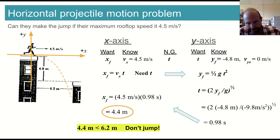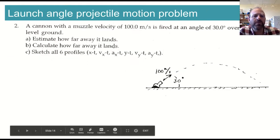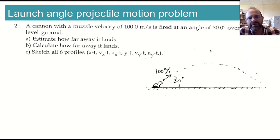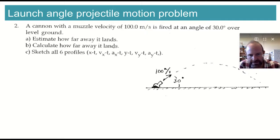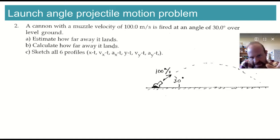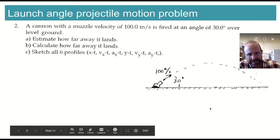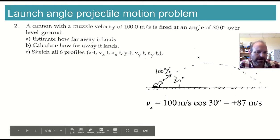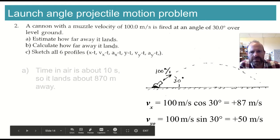Another example: we are firing a 100 meter-per-second projectile at an angle of 30 degrees over level ground, and we want to know how far away it lands. First, a quick estimate: this is a 30-60-90 triangle, which means the y component of initial velocity is about 50 meters per second. That means it will take 5 seconds to go up and 5 seconds to come down — about 10 seconds total. Then 10 seconds times about 80 meters per second horizontally gives us about 800 to 870 meters, so we can predict it will land somewhere between 800 and 900 meters.